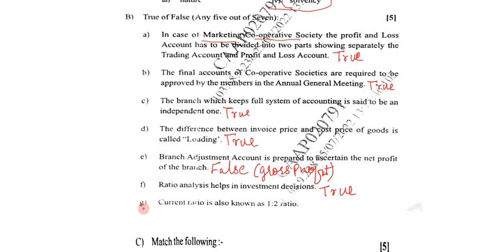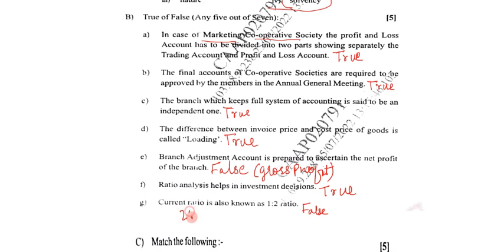Next, G: Current ratio is also known as 1 is to 2 ratio. This statement is false. Current ratio is known as 2 is to 1 ratio. So this statement is false.